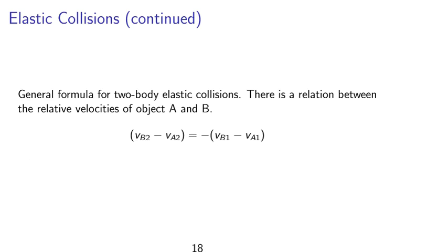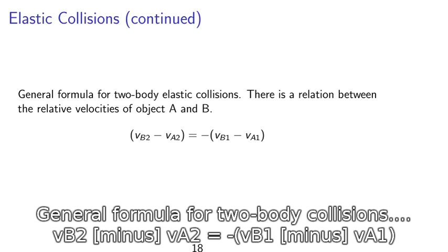Elastic collisions. We can consider the general formula for a two-body elastic collision. There is a relation between the relative velocities of object a and object b. So we have vb2 minus va2 equals negative vb1 minus va1.